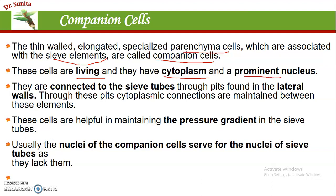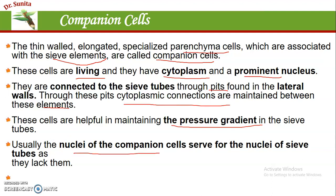Companion cells are connected with the sieve tube; each sieve tube has a companion cell present. These companion cells are connected with the sieve tube with the help of pits found in the lateral walls of the sieve tube elements and the companion cells. Through these pits, cytoplasmic connections are maintained. These cells are very helpful in maintaining the pressure gradient in the sieve tubes during transport, and these cells have nuclei.